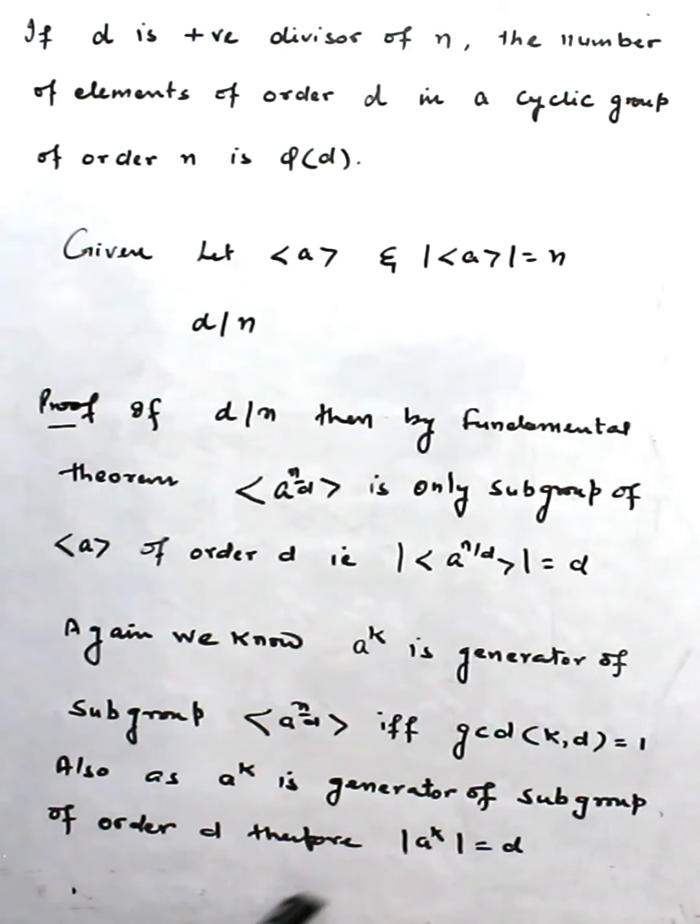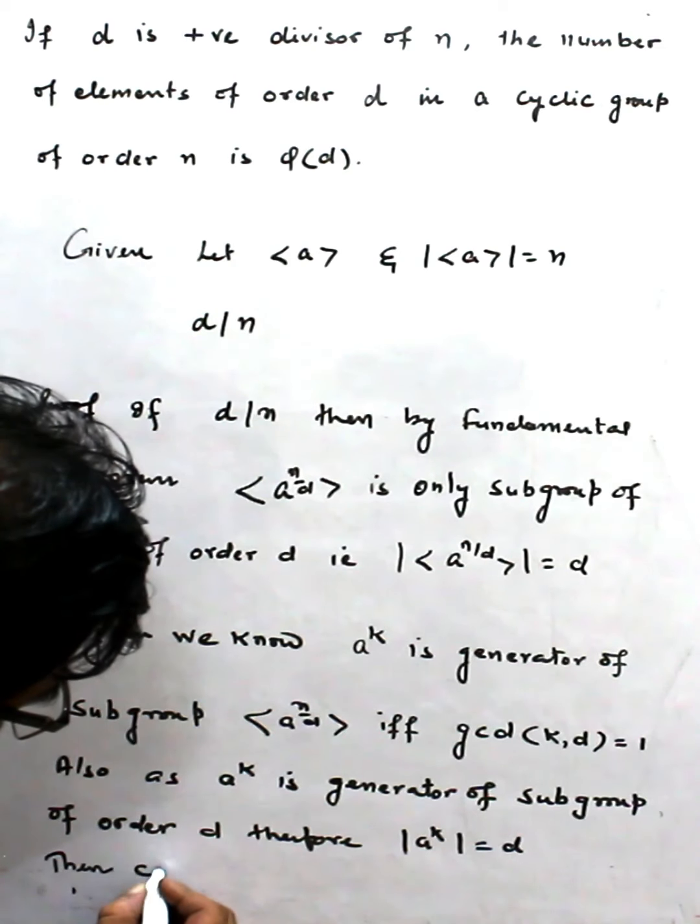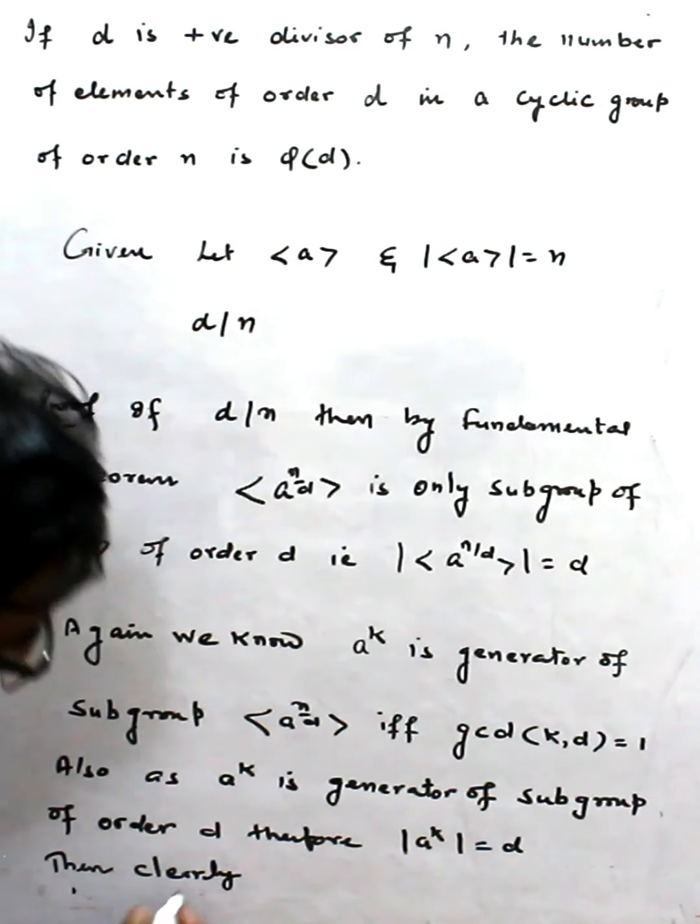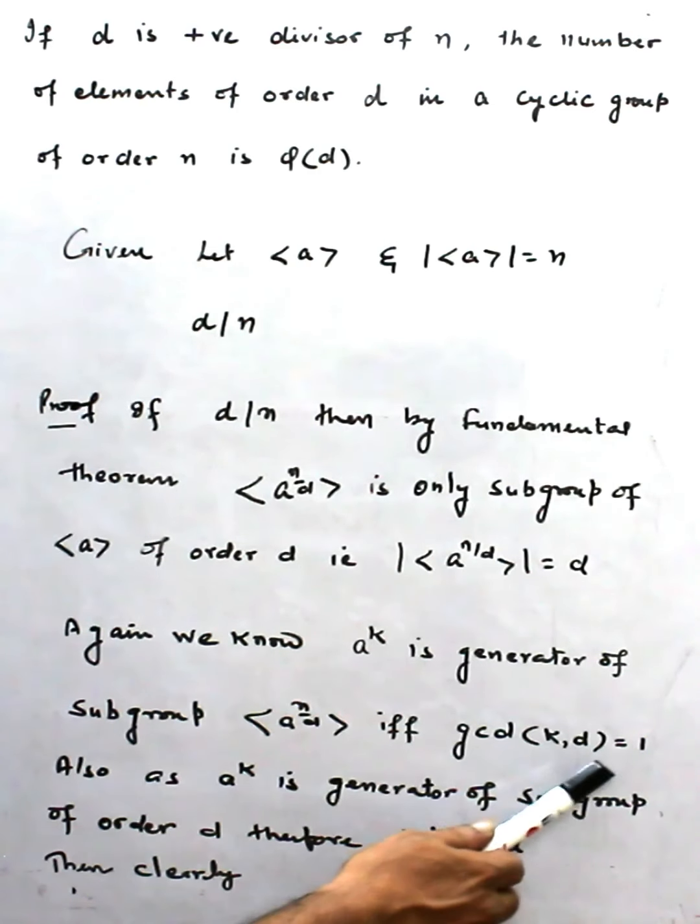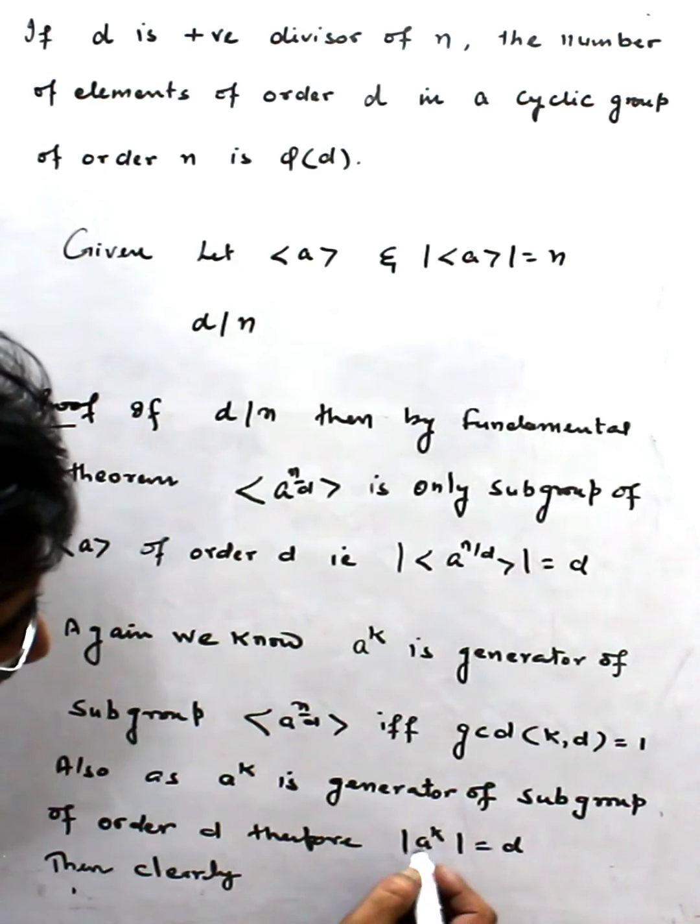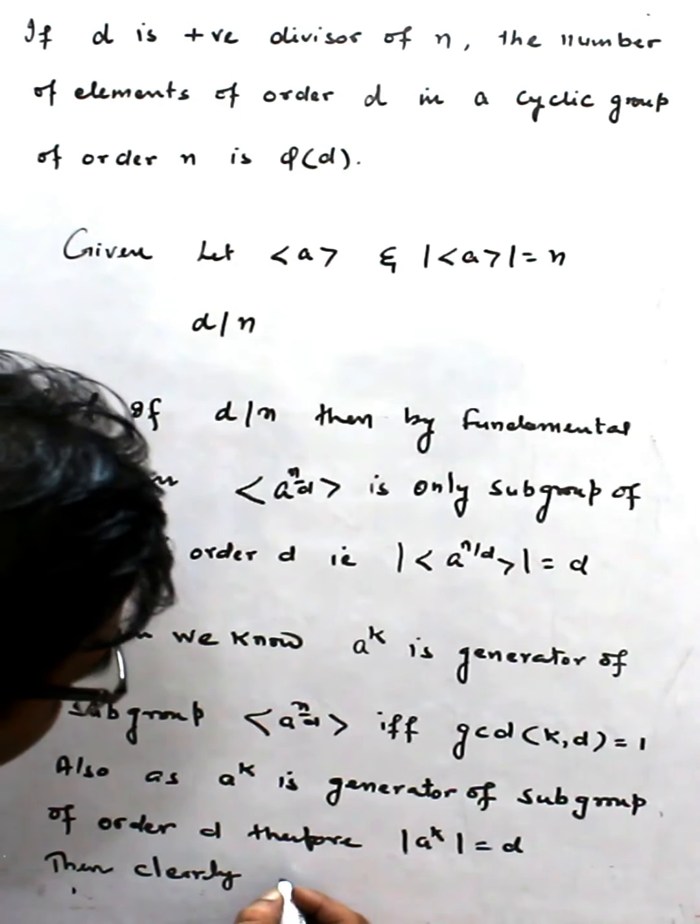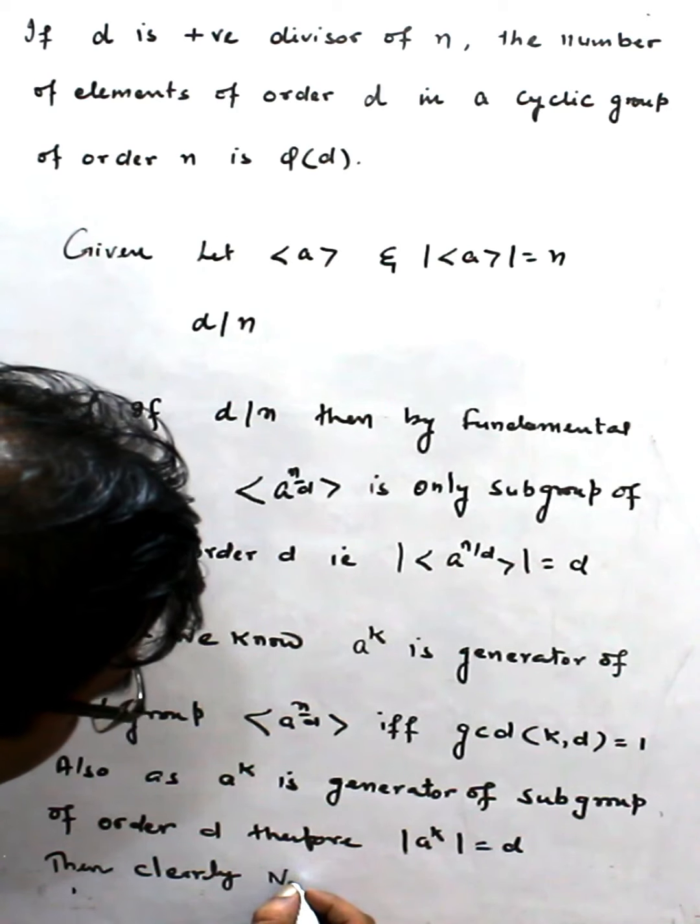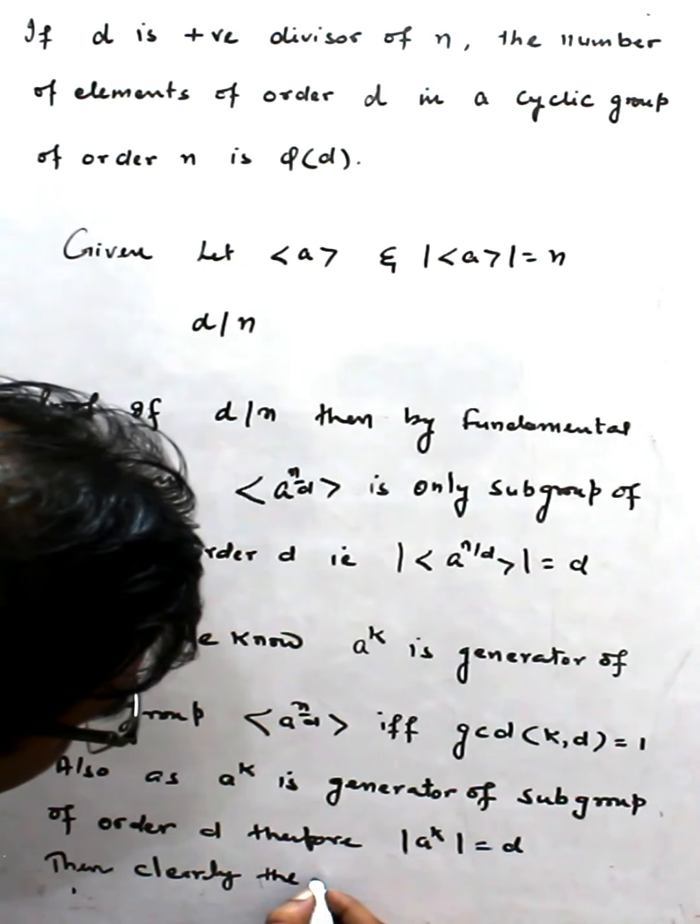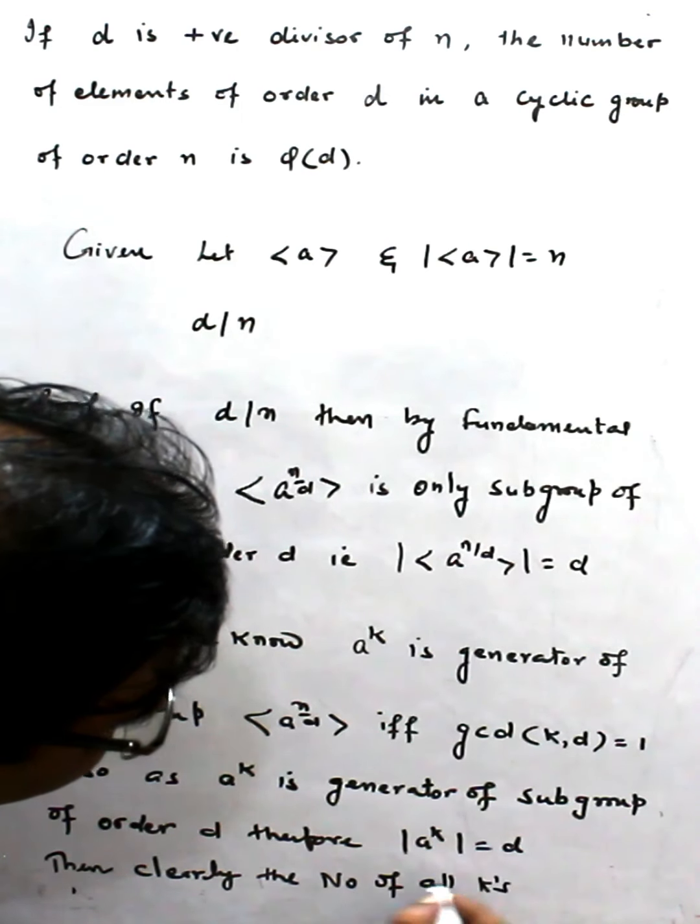Clearly, if d is some number, there are many numbers which are less than d and prime to d. Then clearly, the number of all k's, or we can say...